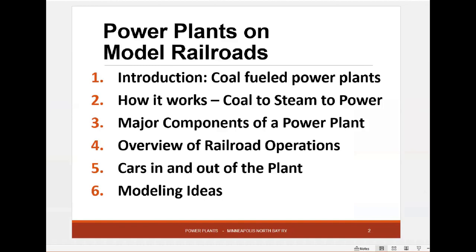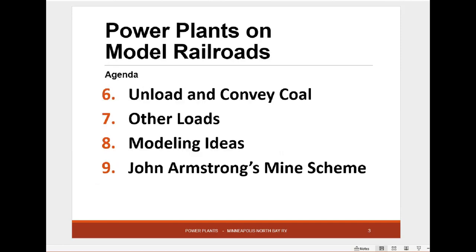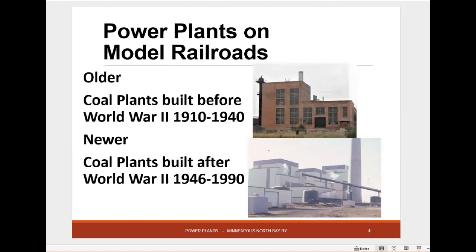We'll talk about coal-fueled power plants because those are the ones that obviously need railroads — how they work from coal to steam to electricity, the major components of a power plant, an overview of railroad operations, the cars in and cars out of the plant, and some modeling ideas. Also unloading and conveying coal, other loads that go in and out of a power plant, more modeling ideas, and John Armstrong's mine scheme, which is quite brilliant. He was pretty brilliant.